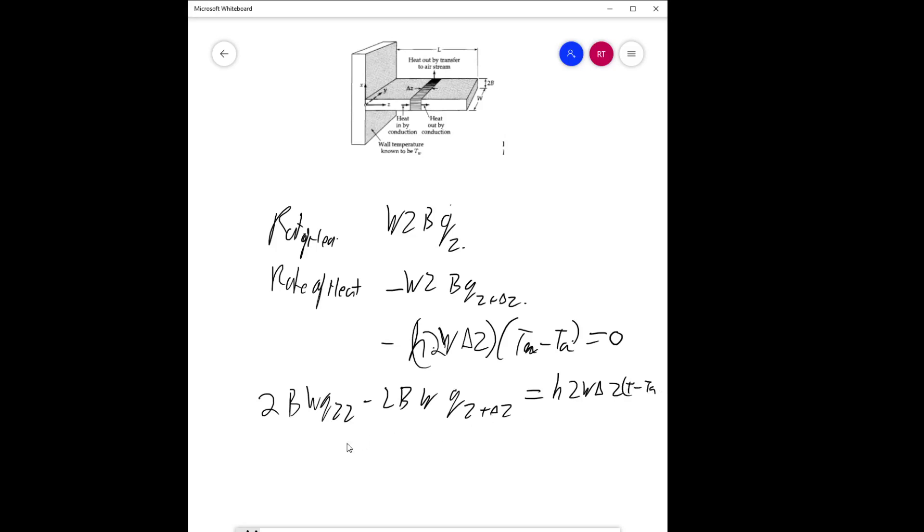Now dividing the whole thing by 2W delta Z times P, what you get is the differential dQ_z/dZ, and this is just H/P times (T minus T ambient).